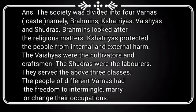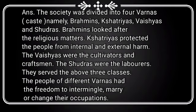four varnas, that is castes, namely Brahmins, Kshatriyas, Vaishyas, and Sudras. Brahmins looked after religious matters. Kshatriyas protected the people from internal and external harm. The Vaishyas were the cultivators and craftsmen, and the Sudras were the laborers — they served the above three classes.